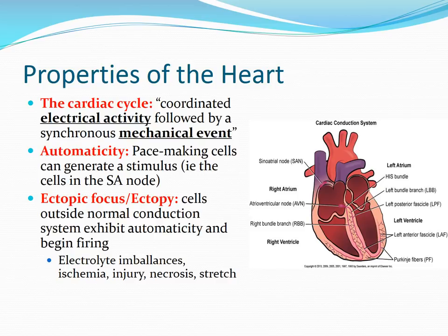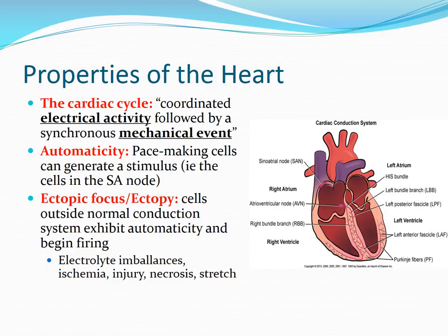Next up is an ectopic focus, or ectopy. This is not normal. An ectopic focus is a little group of cells outside of the normal path of electricity — the normal chain of events. When that group of cells decides to fire at will, that's called an ectopic focus. It could happen just once or repeatedly. You have an area where these cells are firing out of turn, and when you see evidence of this on your EKG strip, that's called ectopy.